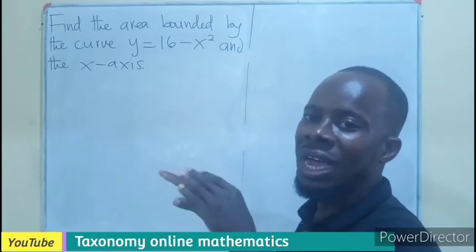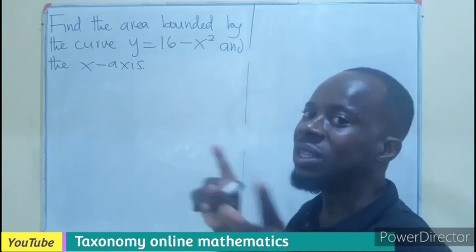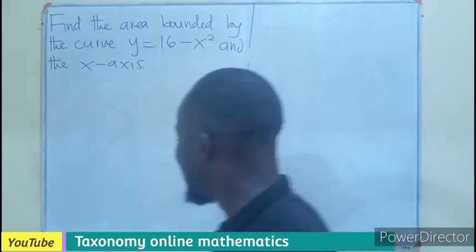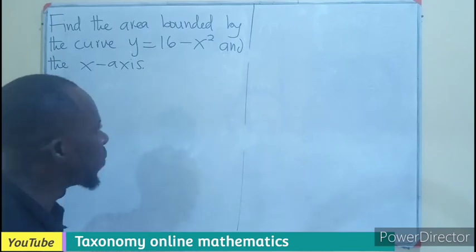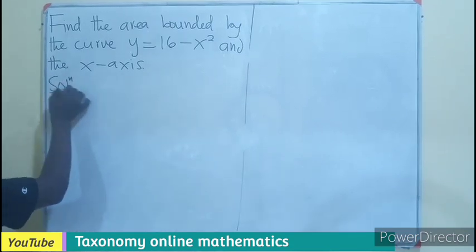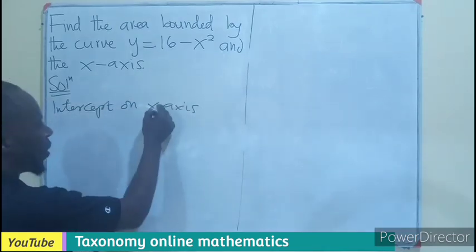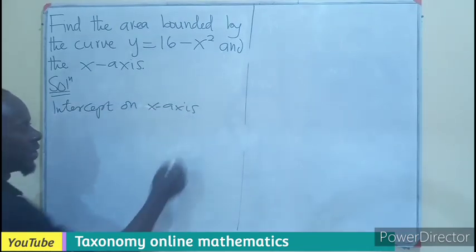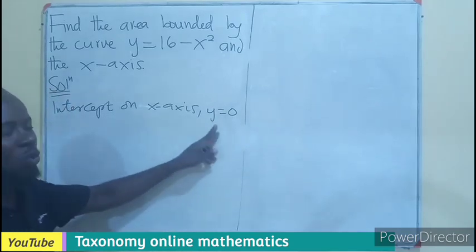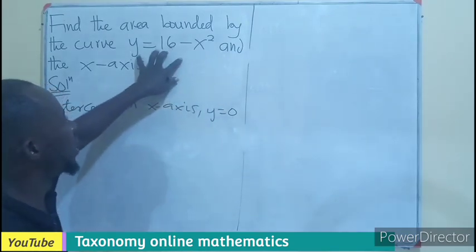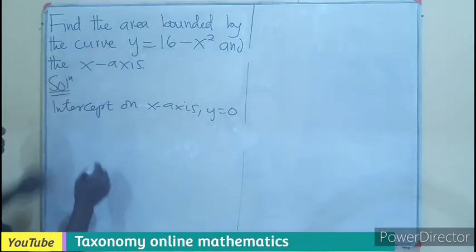So we need to find the limit of integration. In this case, we begin by finding the intercept on the x and the y-axis. If you are looking for the intercept, we let y equals 0 from this expression. So if y is 0, we'll be having 0 equals to 16 minus x squared.